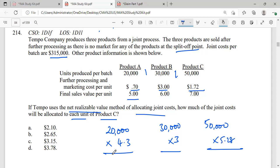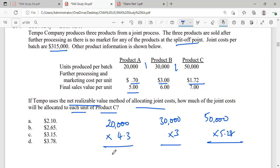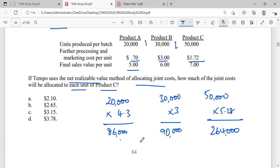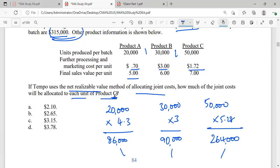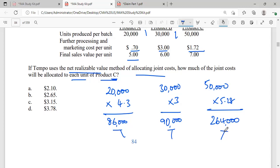20,000 into 4.3 is 86,000. 30,000 into 3 is 90,000. 50,000 into 5.28 is 264,000. Now these are the net realizable values. Based on these, we should allocate this particular joint cost which is $315,000. Now we want to find out for Product C only. So first of all, what is the total of these three? 264,000 plus 90,000 plus 86,000 equals 440,000.